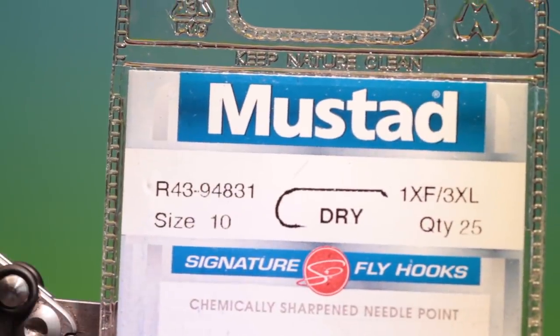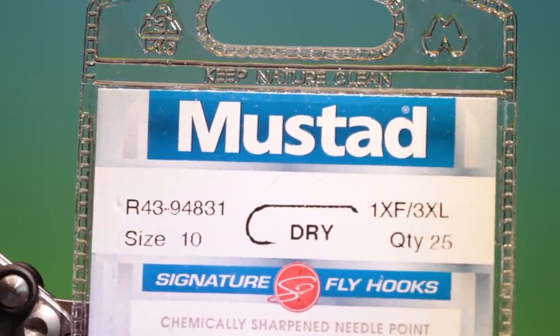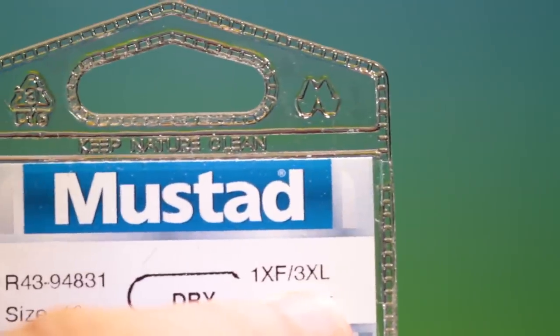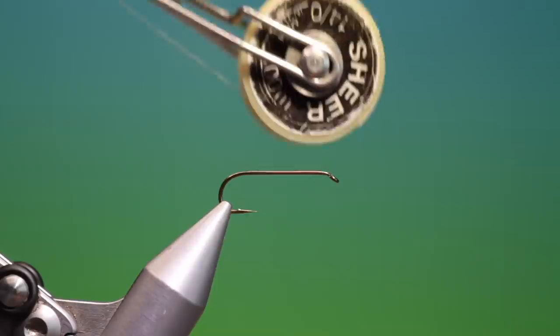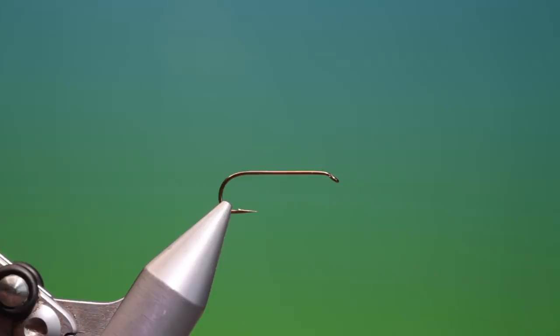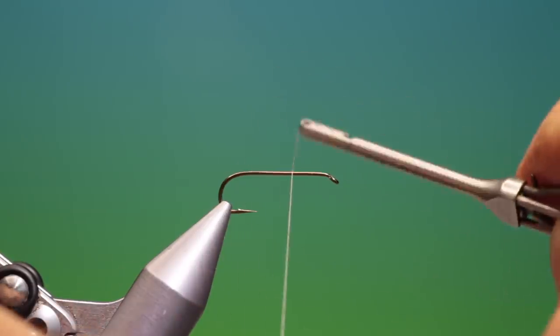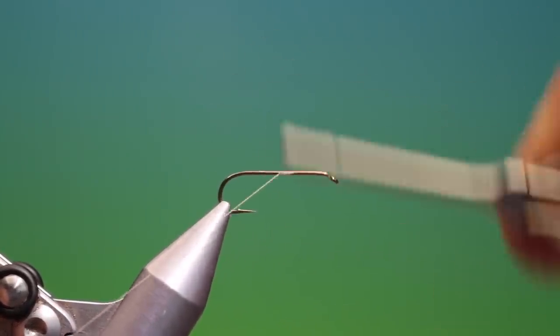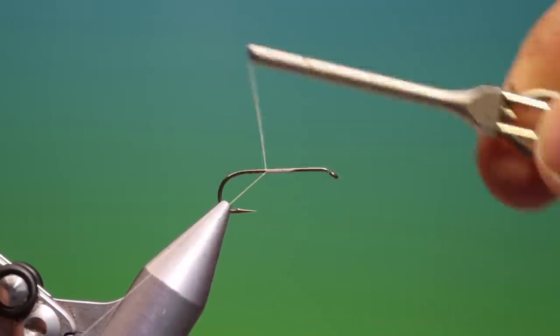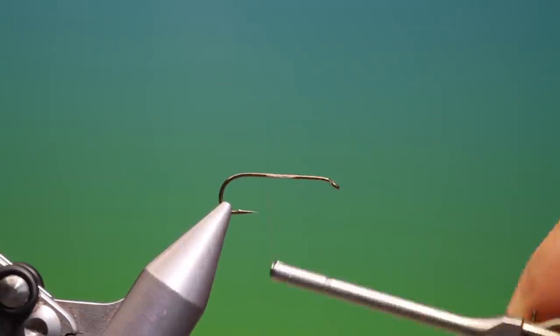Okay, we'll start with a Mustad R43 size 10 dry fly hook. This is a three extra long hook shank. I've got some gray sheer, 40 nought. We'll just attach our tying thread and we go back to about there.